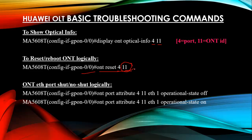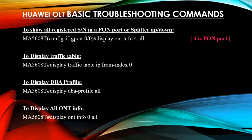To perform an ONT ethernet port admin shutdown or no-shutdown, use the port attribute command. For example, on a 4-port ONT to shut down ethernet port 1 of ONT ID 11, set the operational state to off for 'ether1' — this is the admin-down command. To bring it back up, set the operational state to on. This is an interface mode command.